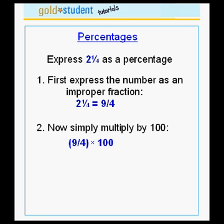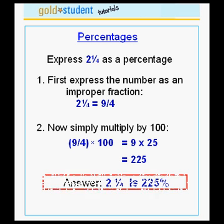9 fourths times 100 is equal to 9 times 25, because the 4 divides into 100 with a quotient of 25, and that is equal to 225. Therefore, 2 and 1 quarter written as a percentage is 225%.